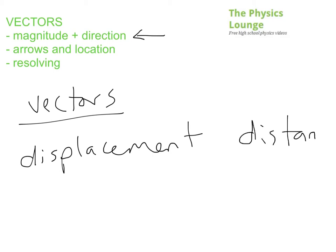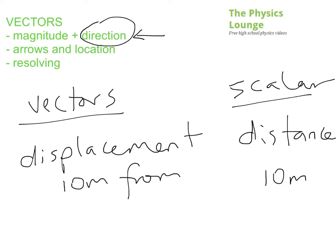And so displacement is sort of a distance measurement. But distance is what we would call a scalar. And it does not have the direction part. So you might have 10 meters as your distance. But your displacement might say 10 meters from a particular point. Or at a particular direction.